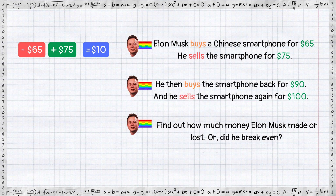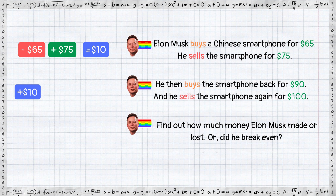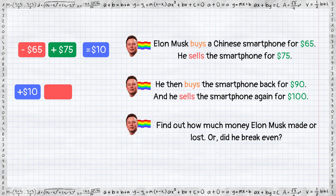He then buys the smartphone back for $90, so it means he needs to spend $90, which is a negative $90. So the net position is minus $80.